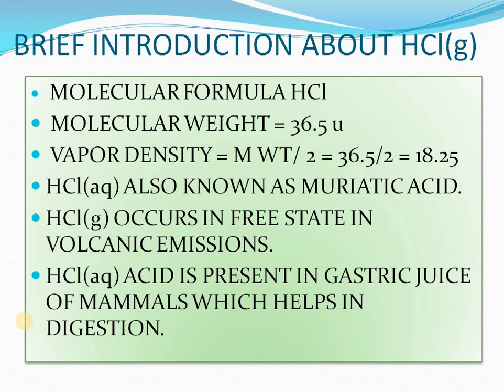HCl gas is also known as muriatic acid and it occurs in its free state in volcanic emissions. When HCl(aq) is written, it refers to the acid; when (g) is written, it refers to the gas. Hydrogen chloride acid is present in the gastric juice of mammals, which helps in digestion.